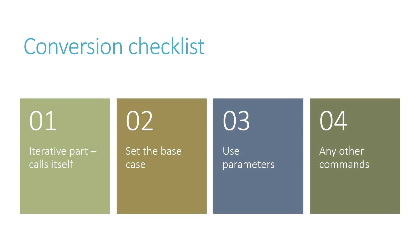So my conversion checklist: I make sure that the function calls itself. I set the base case, which is the reverse of the while loop test. I use parameters to pass values along. And I make sure that any other commands are included in the function.